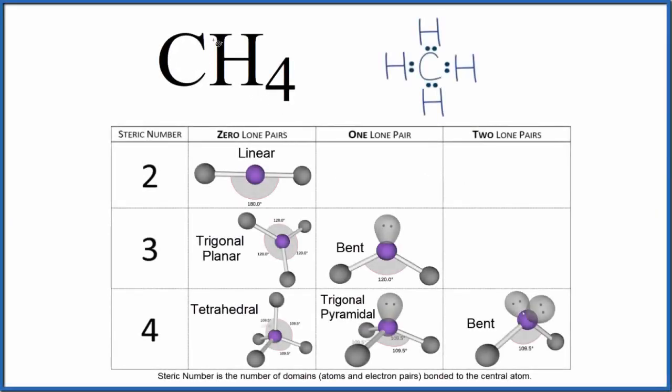Let's take a look at the molecular geometry for CH4, this is methane, and we'll start with the Lewis structure. Here's our Lewis structure for methane and we'll notice that the central carbon here has one, two, three, four hydrogen atoms bonded to it. That means our steric number is four, so we have a steric number of four.